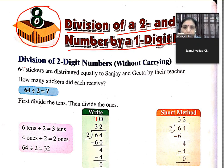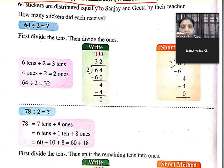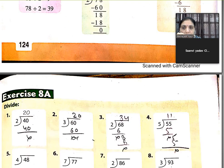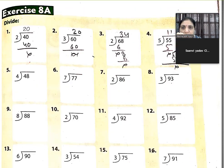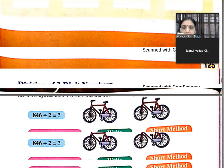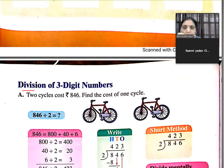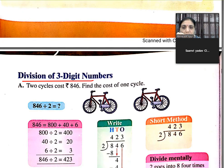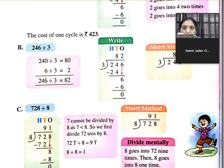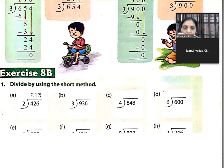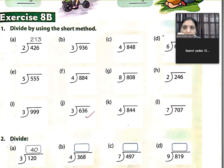Division of 2 digit numbers without carrying, this we have read before. Exercise 8a, all of this was done. Then division of 3 digit number. Page number exercise 8b, all of this was done.